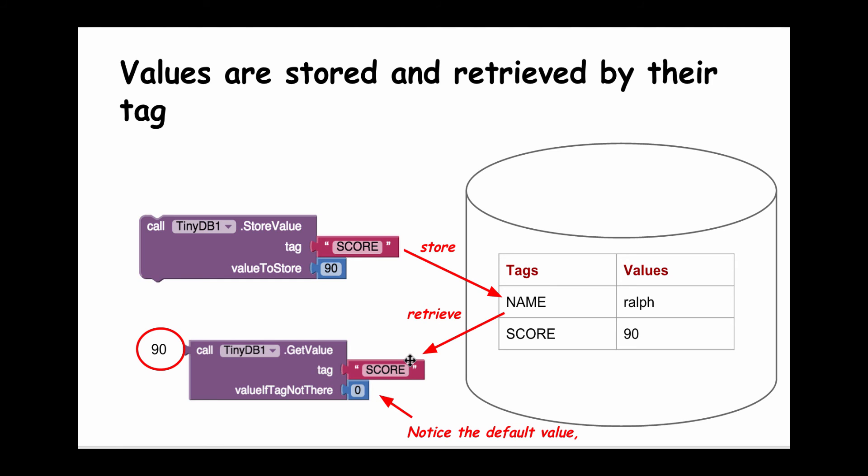If I know that the data stored with this tag is a number, then I should put some default number in here rather than a default string. Then I can use whatever's returned in arithmetic and other number blocks.